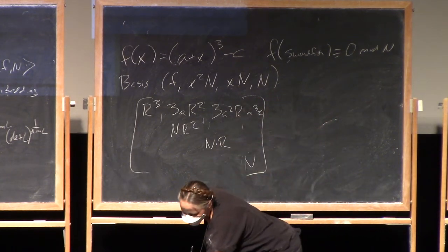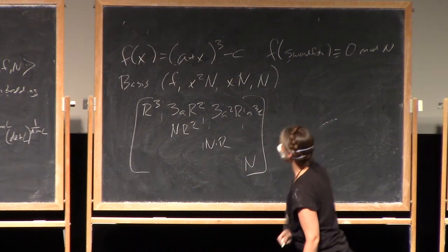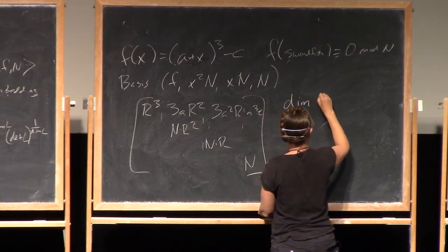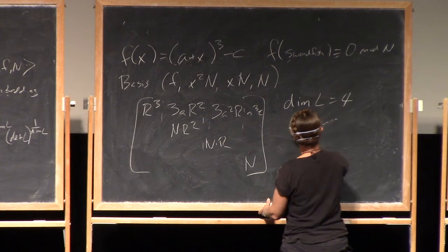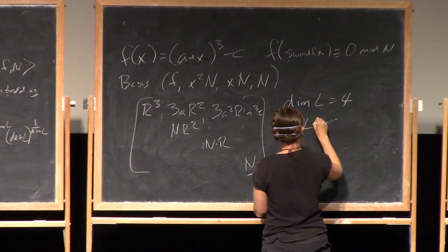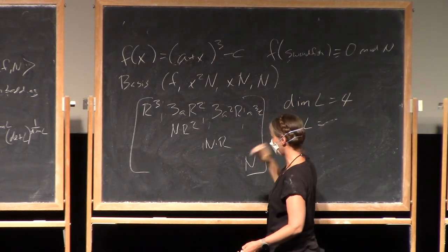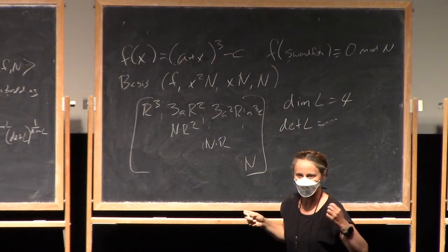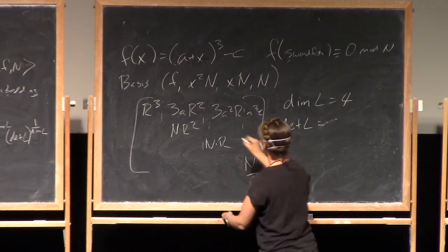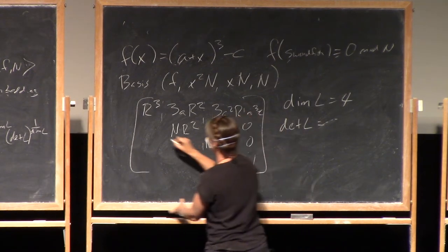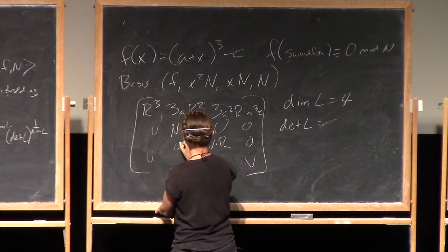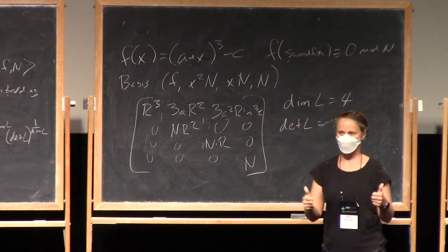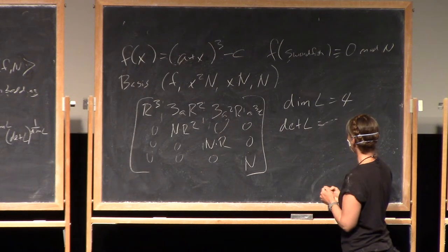So if I want to explicitly compute the determinant, okay, so the dimension is four, the determinant. Well, this is conveniently an upper triangular. Is it? Yeah, all the rest are zeros. There we go.